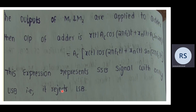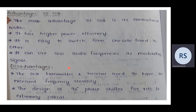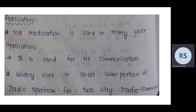Advantages of SSB: it has narrow bandwidth, giving higher power efficiency; it is easy to switch from one sideband to another; and it can use low audio frequencies as the modulating signal. Disadvantages: SSB transmitters and receivers need excellent frequency stability, and the design of the 90-degree phase shifter for x(t) is extremely critical. Applications: SSB is used in many voice applications, high-frequency communication, and widely in the short-wave portion of the radio spectrum for two-way radio communication.